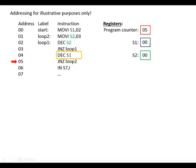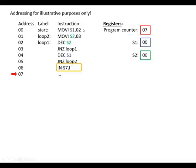We subtract one from S1 again and the result is zero, so we carry on. In total, the outer loop ran twice and the inner loop ran three times each iteration — two lots of three, or six loops altogether. As a further example, if S1 were 50 and S2 were 100, we'd get 50 lots of 100 loops, or 5,000 loops in total.